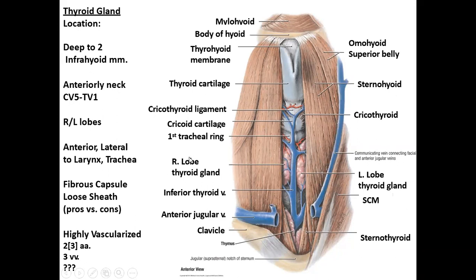The thyroid gland is anterolateral to your larynx and trachea — remember, your larynx is above the vocal cords and your trachea is below them. It is enclosed within a fibrous capsule and is highly vascularized. The cartilage structure from superior to inferior goes: thyroid cartilage, cricoid cartilage, first tracheal ring, then the thyroid gland.